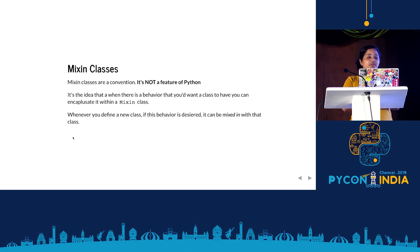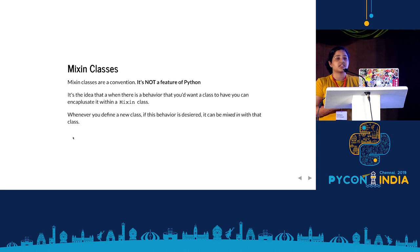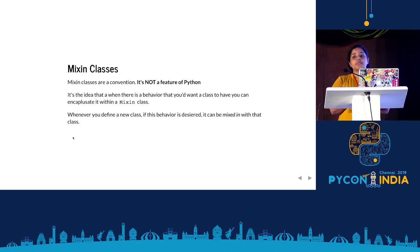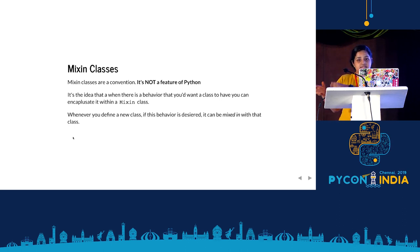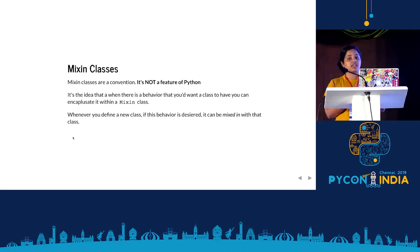Mixin classes are not a feature of Python — you won't find this documented anywhere as such. It's something you encounter in different codebases; SymPy is one, Django is another. What they essentially mean is a nice way of encapsulating behaviors. For example, in SymPy, you have different expressions, polynomials, integrals — all of these can be evaluated. The behavior of 'can be evaluated' can be put in a separate class, and whichever class needs that behavior can mix it in. This makes codebases very readable.